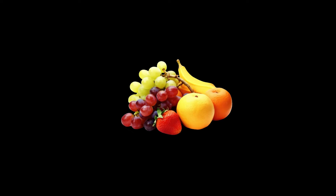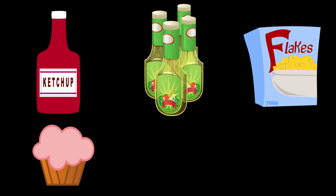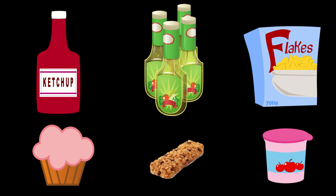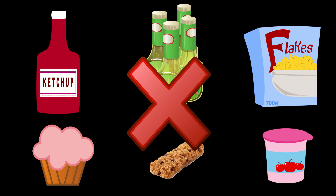Studies have established a direct correlation between overconsumption of fructose and developing fatty liver disease. Fructose is a simple sugar naturally found in fruits, but it's not the fructose in fruits that causes the problem. Fructose becomes a problem when consumed excessively in the form of sucrose or table sugar, or as high fructose corn syrup, which is added to packaged and processed foods like breakfast cereals, desserts, baked goods, candies, flavored yogurt, salad dressings, and ketchup.